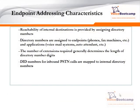Endpoint addressing is a way of reachability of internal destinations, provided by assigning a directory number to an endpoint. When a Cisco phone registers to Call Manager, the only way you can address that particular phone is by assigning a directory number or an extension. It could be two-digit, one-digit, four-digit — any length that you want to have.